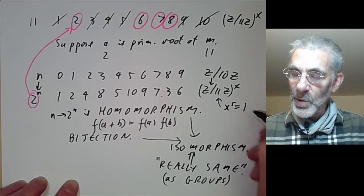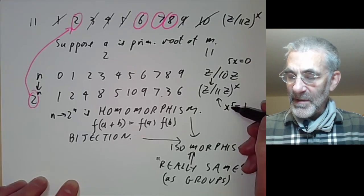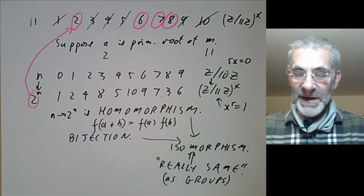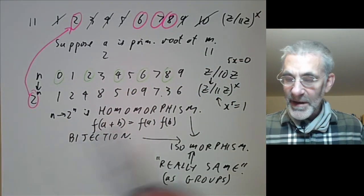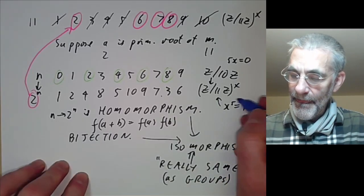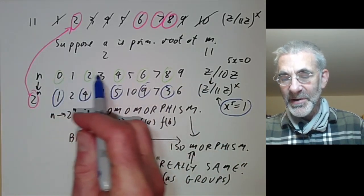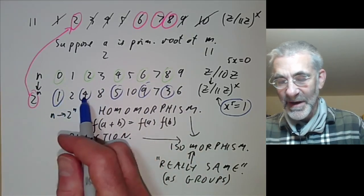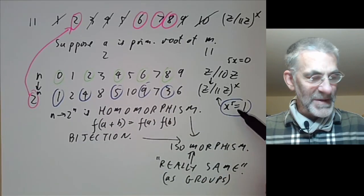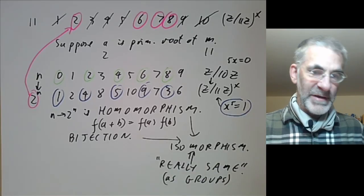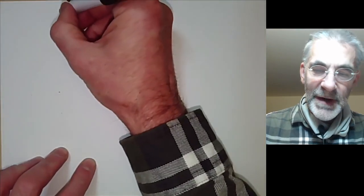For example, suppose we want to know in (Z/11Z)* what are the solutions of x^5 ≡ 1. These correspond to solutions of 5x ≡ 0 in Z/10Z, because 0 corresponds to 1 and fifth powers correspond to multiplication by 5. The elements satisfying 5x ≡ 0 are easy to find — multiples of 2 — and the corresponding elements with x^5 ≡ 1 are just the corresponding elements. Adding is much easier than multiplying, so a primitive root turns multiplicative problems into additive ones.